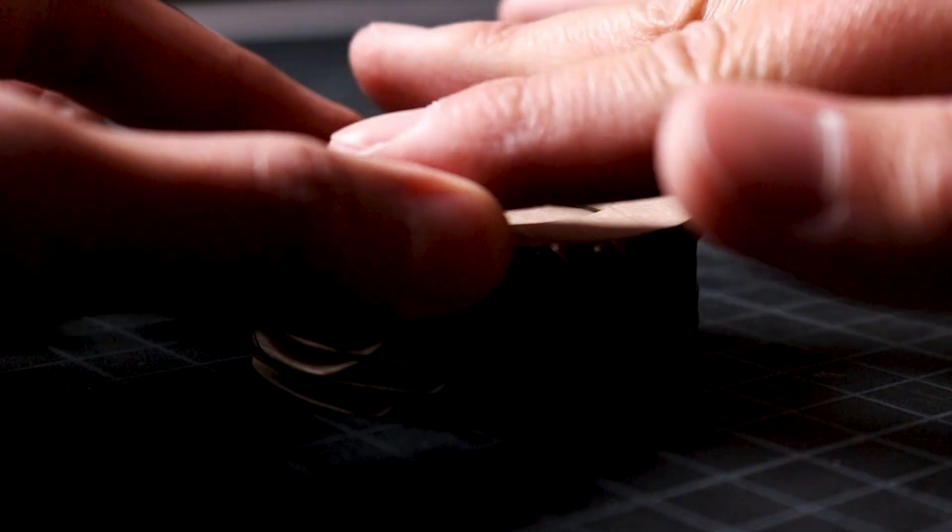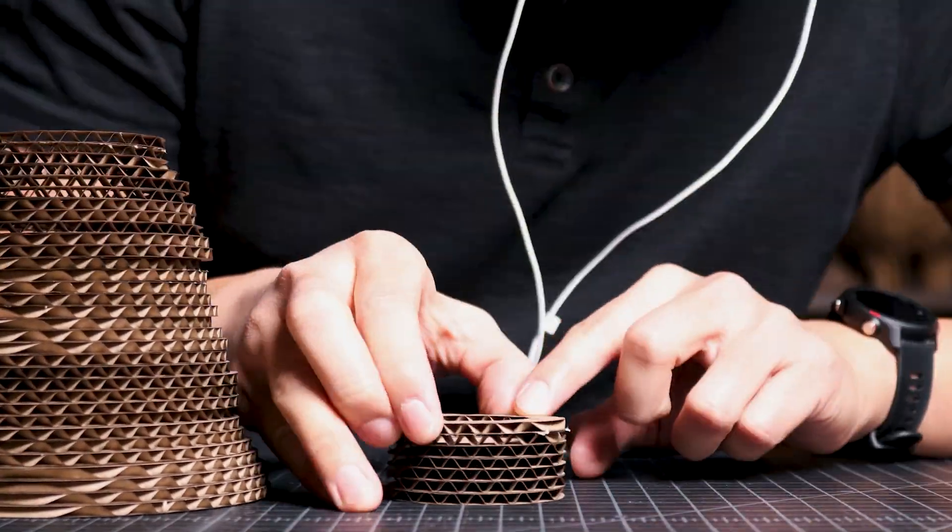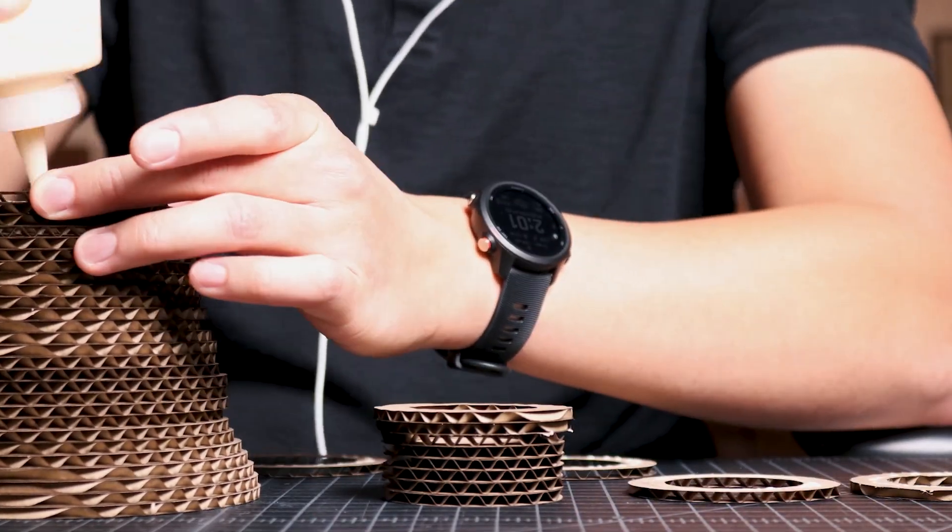You can see that by turning each layer in this way, the corrugations start to twist as we assemble the product.